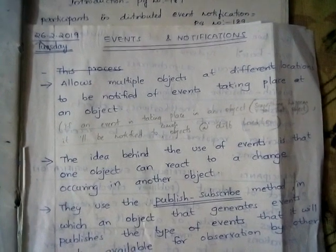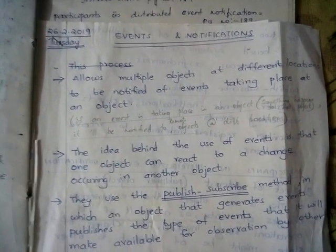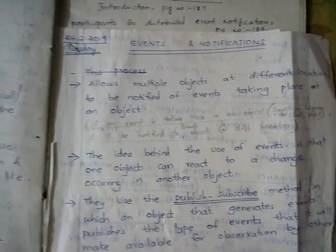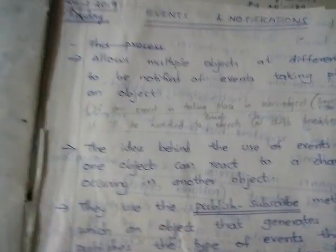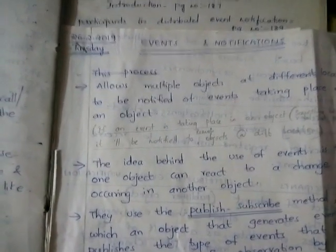First, it allows multiple objects at different locations to be notified of events taking place at an object. That is the main thing explained in events and notifications. It means if an event is taking place in an object, it will be notified to remote objects at different locations. We can relate this to a YouTube channel example.